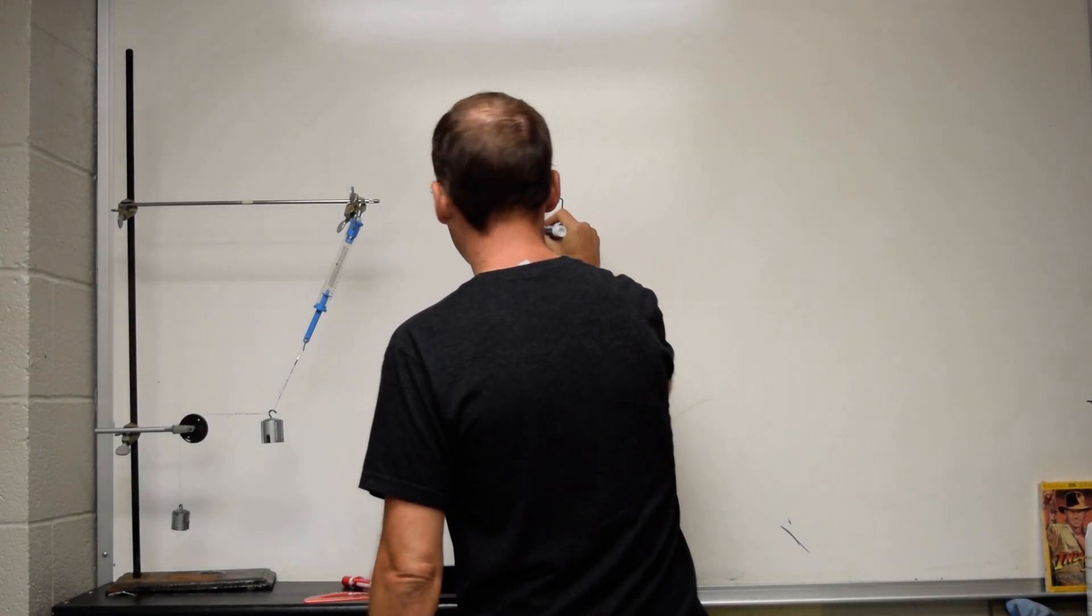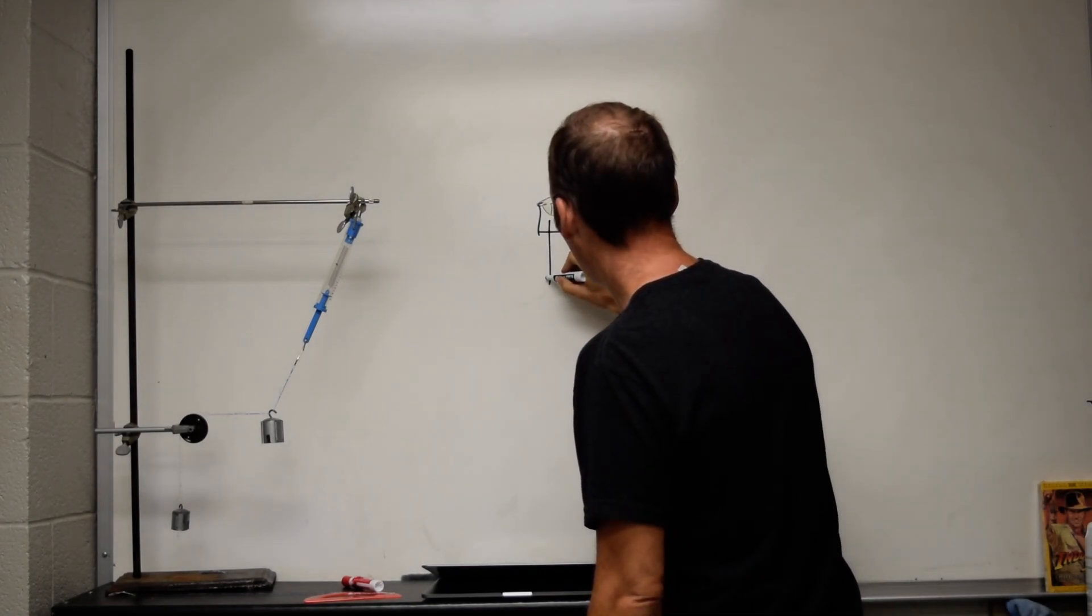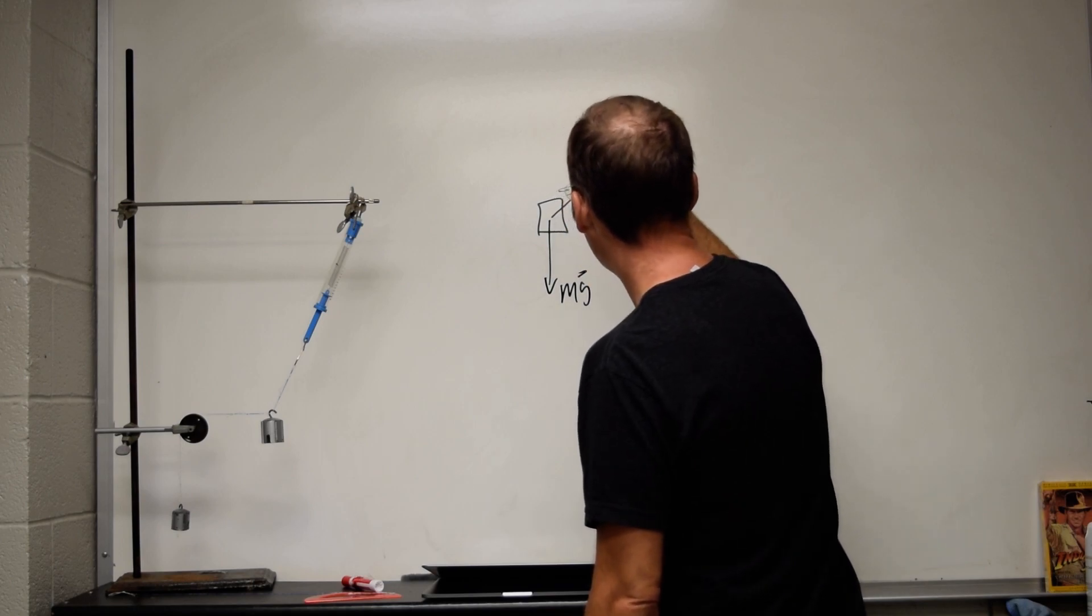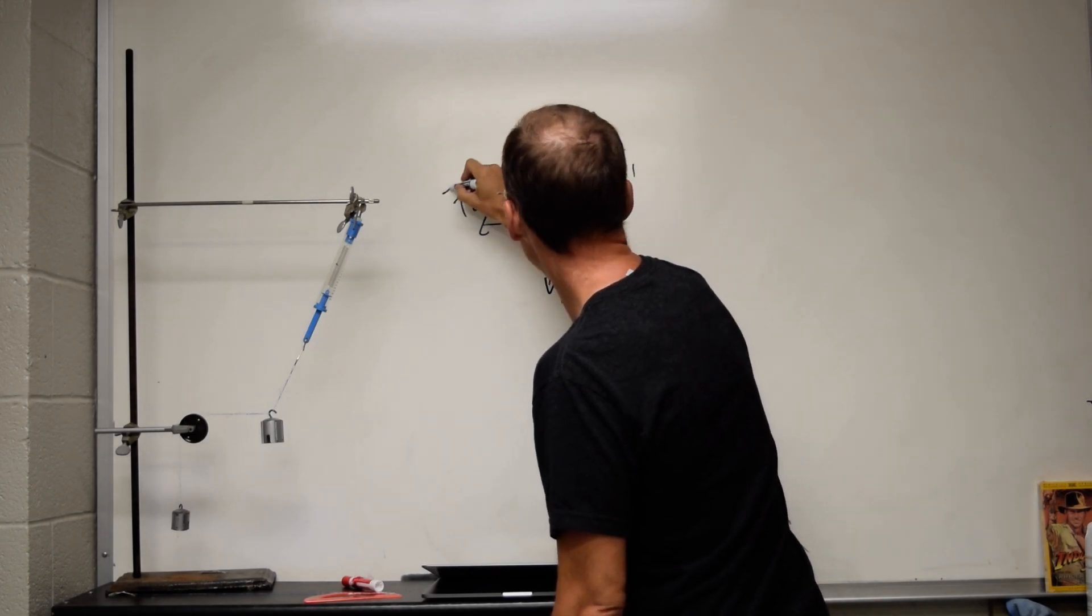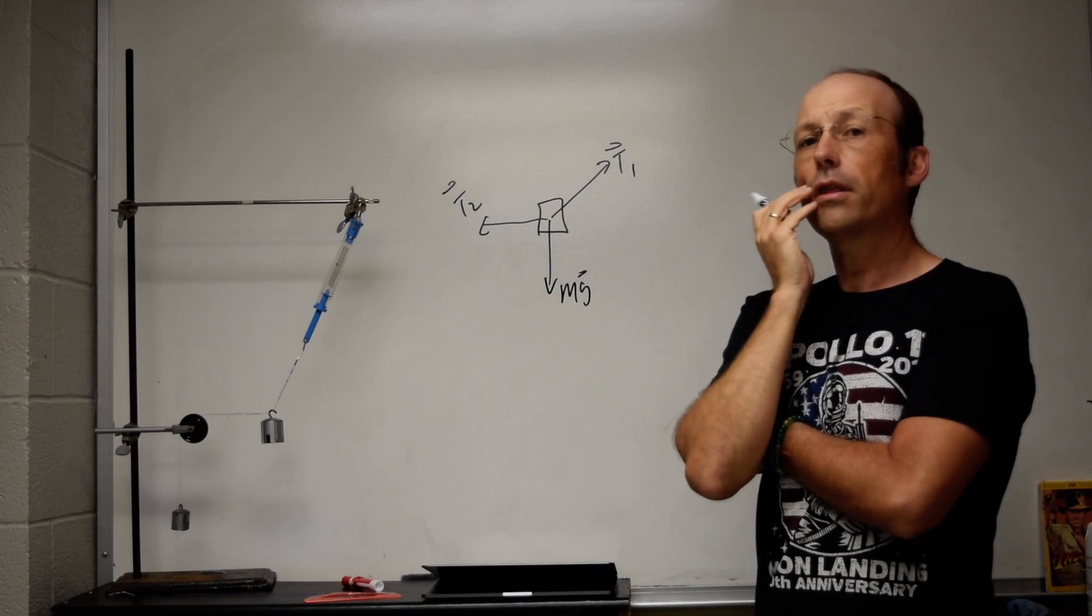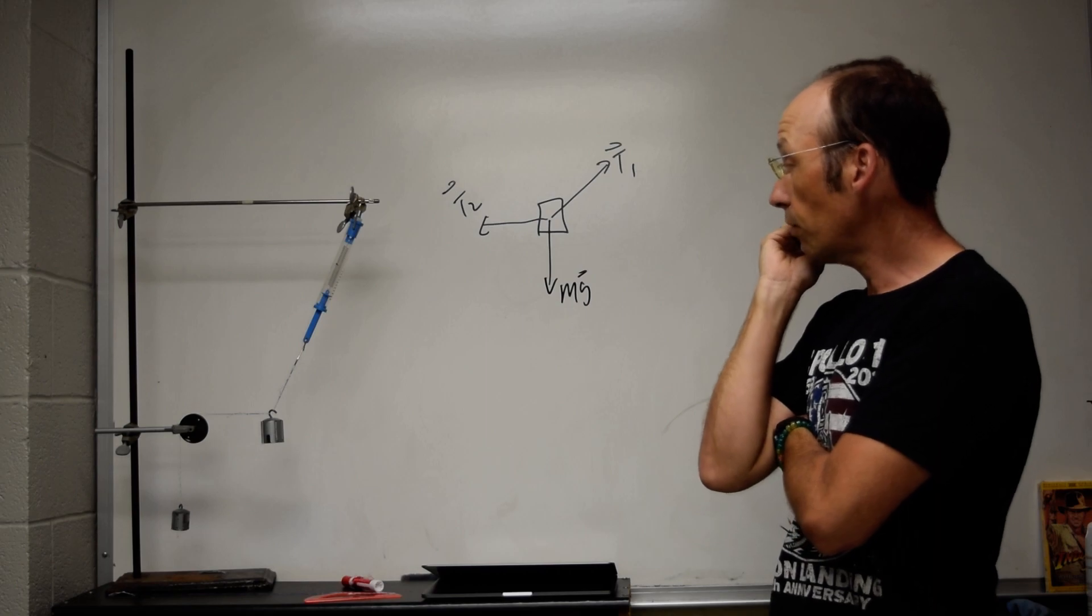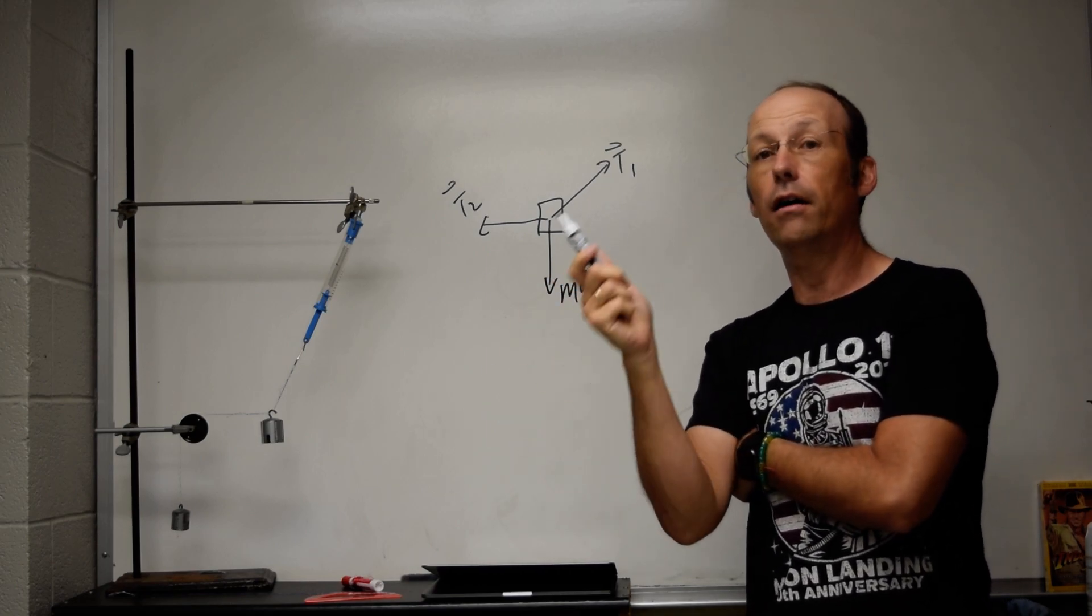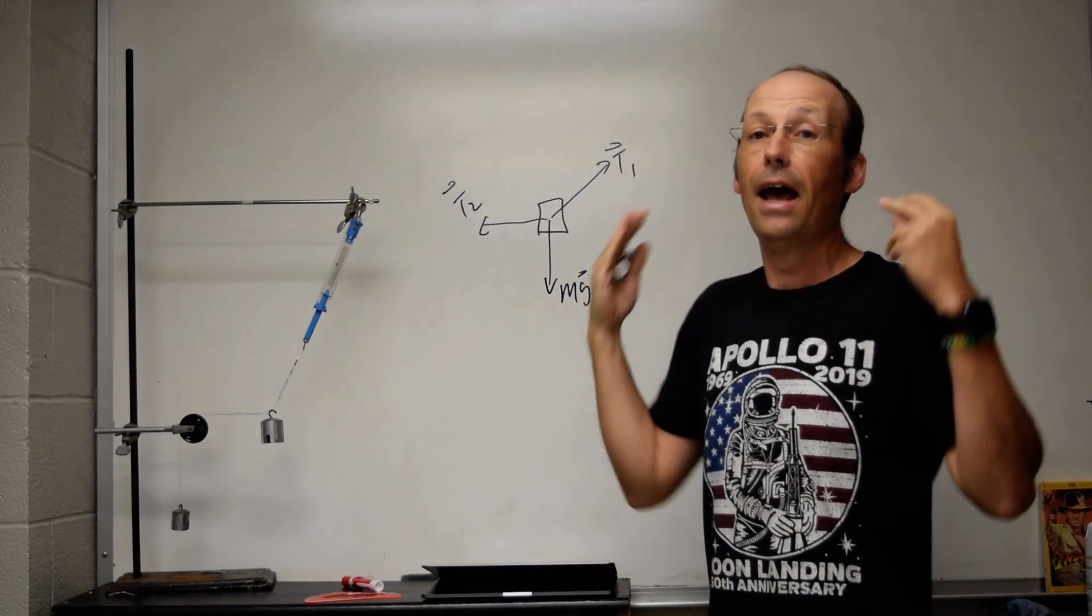Okay, so here I'm going to draw my mass. And then I'm going to have a downward gravitational force. I'm going to call it T1 and this is T2. So the other important thing about forces and strings is that the string force can only pull in the direction of the string. So this is angled that way. The force has to be in that direction.